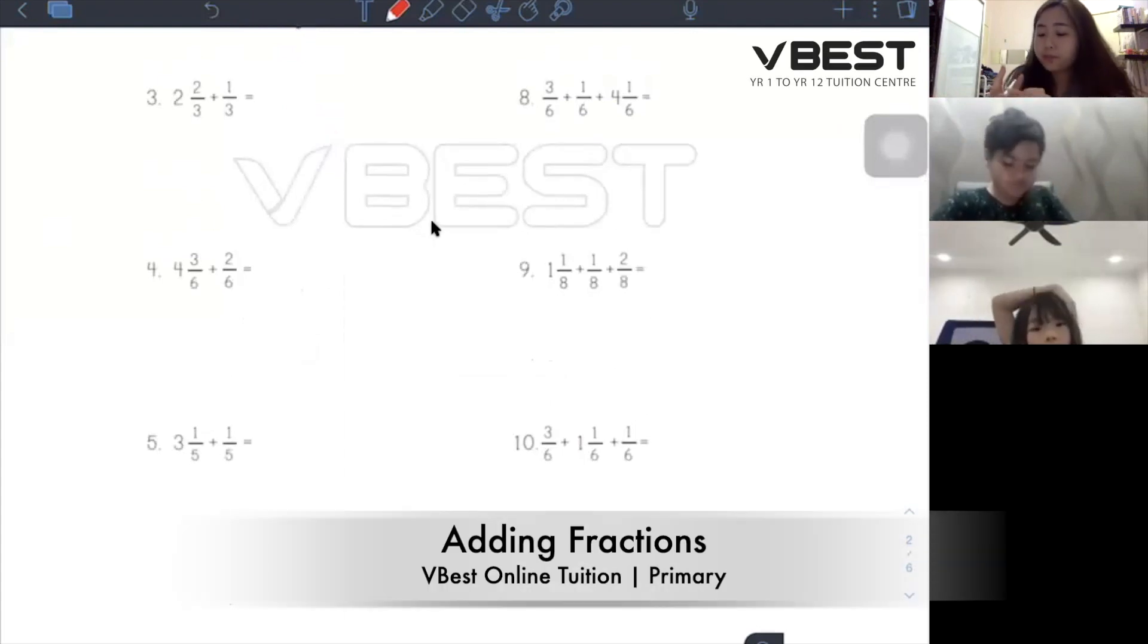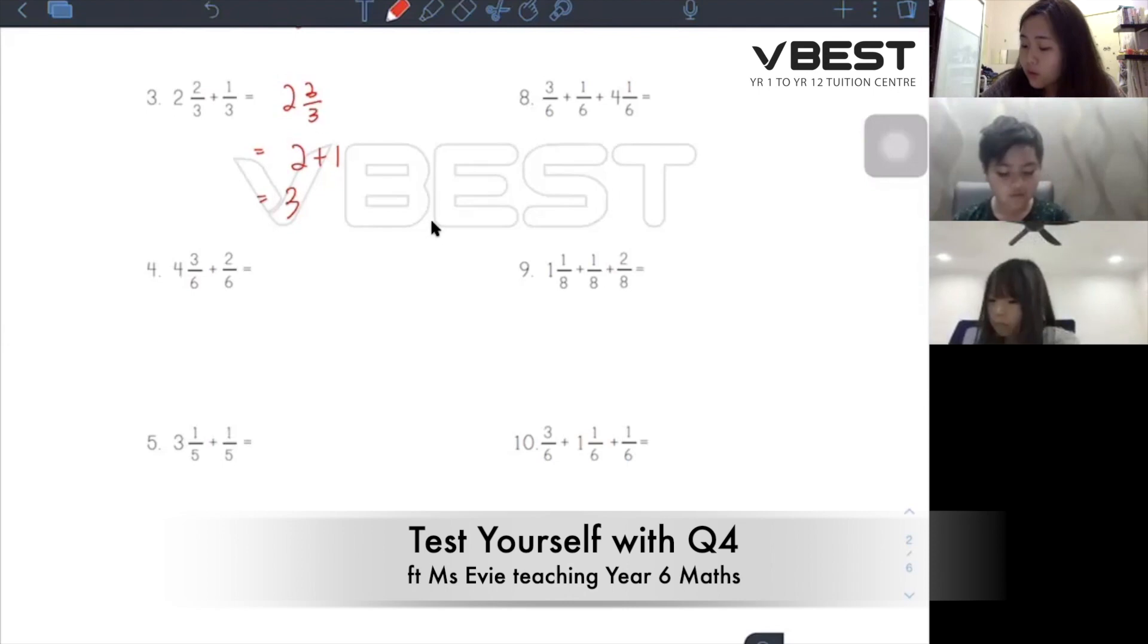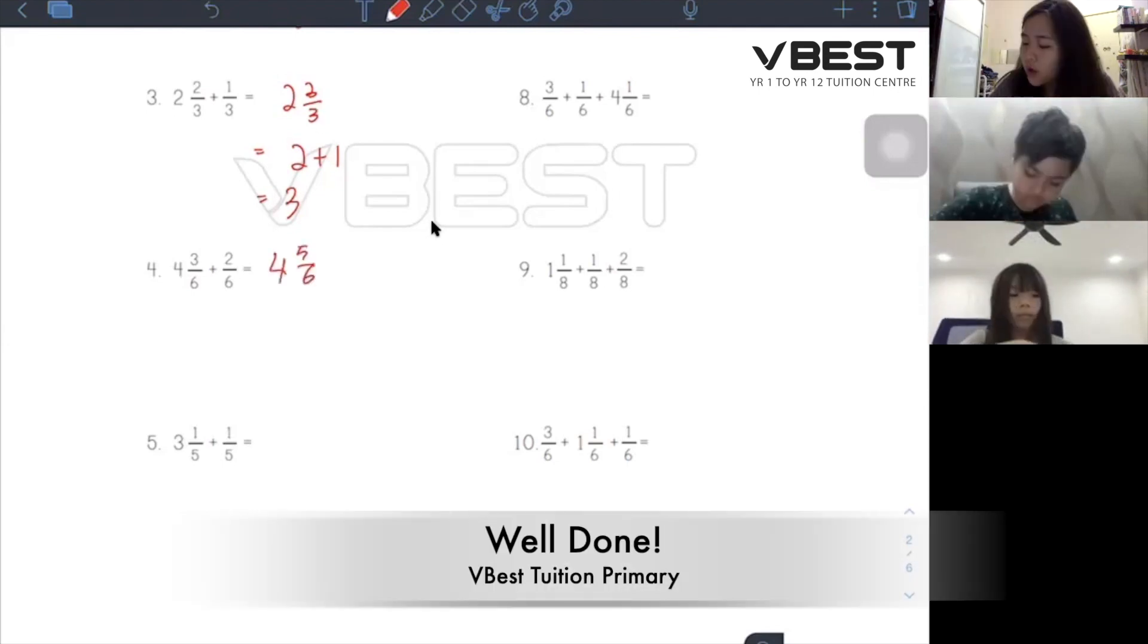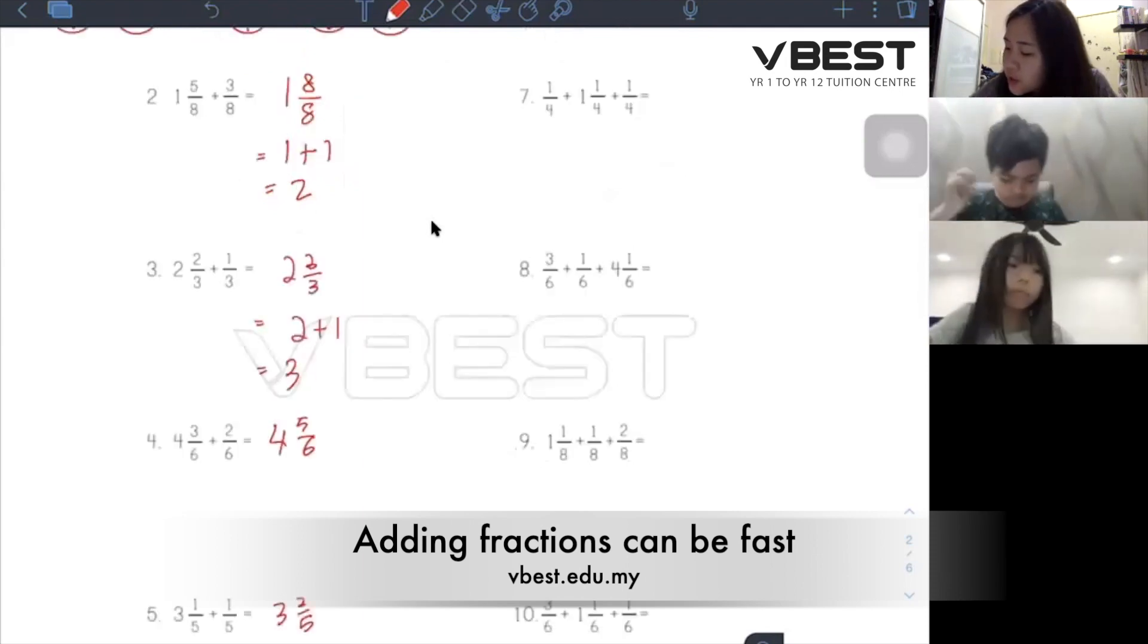What's the answer for question three? Two three over three. My answer for question four is four five over six. Yes. Question five? Three two over five. Yes, you are right. Question seven?